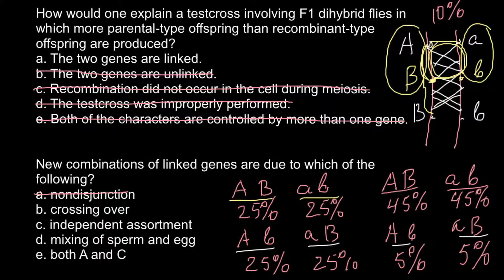Answer C: independent assortment. Independent assortment means that assortment happens randomly, and this also would not be an appropriate answer, so we can cross out this answer. Answer D: mixing of sperm and egg. This is a physical process that also does not affect recombination. So we are only left with answer B.